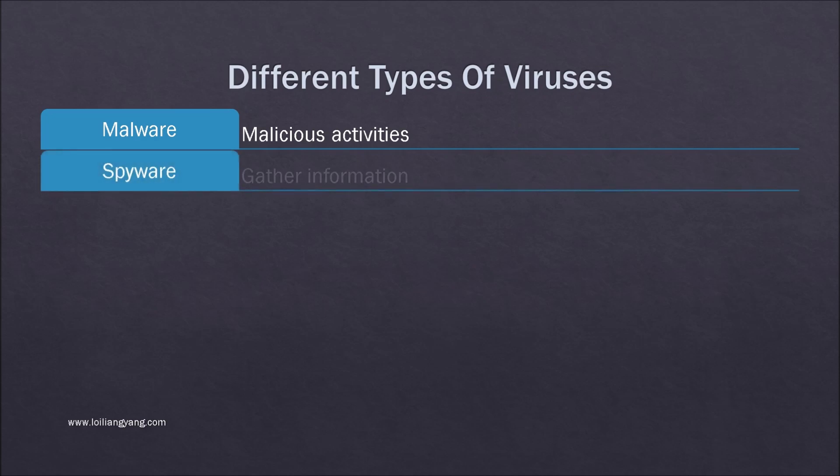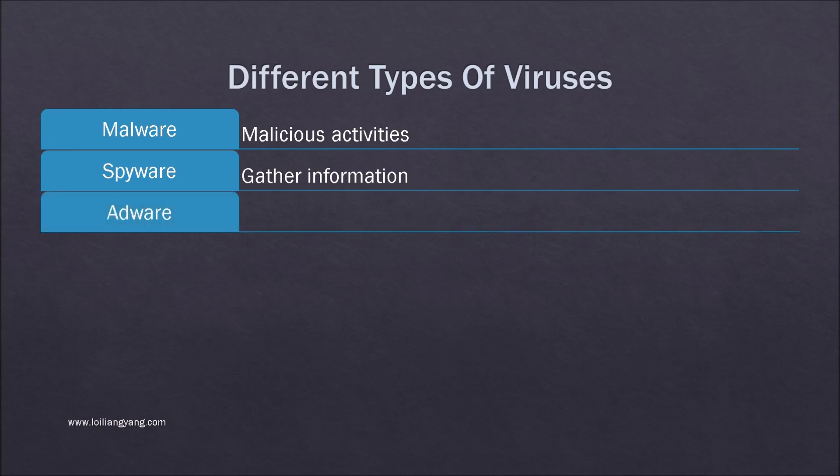Spyware, on the other hand, is installed stealthily into the victim's computer to learn about a victim's behavior. Spyware is software that aims to gather information about a person or organization without their knowledge, and that may send such information to another entity.